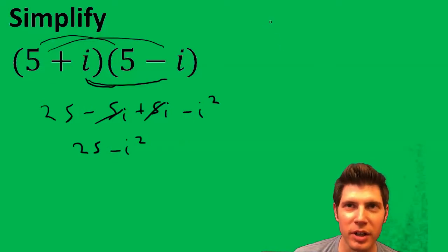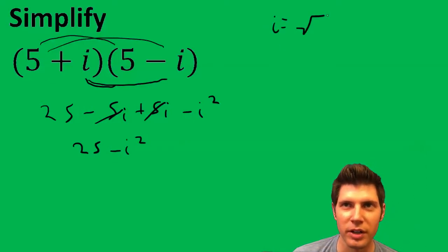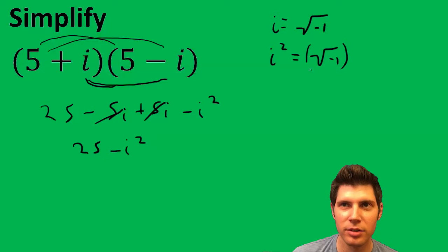And I don't know if you remember this, but i equals the square root of negative 1. So i squared is equal to that squared, which is negative 1.